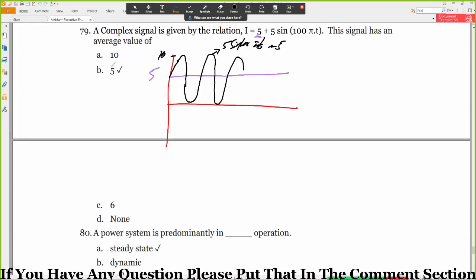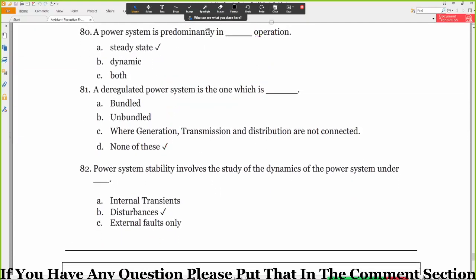So the average value here is 5. This will be the correct option. Next, question 80: A power system is predominantly in dash operation. Steady state, dynamic, both. So the correct option is steady state.